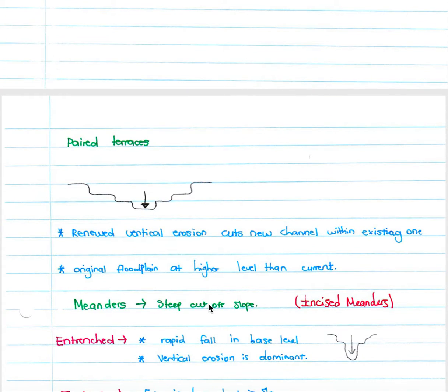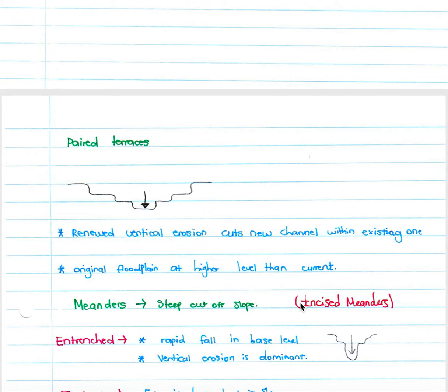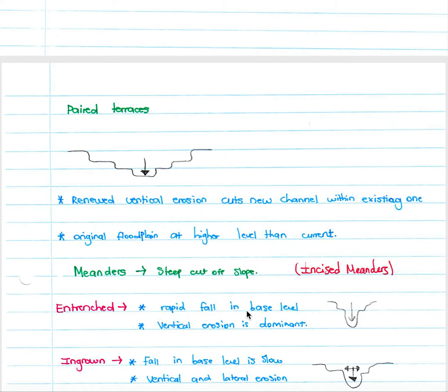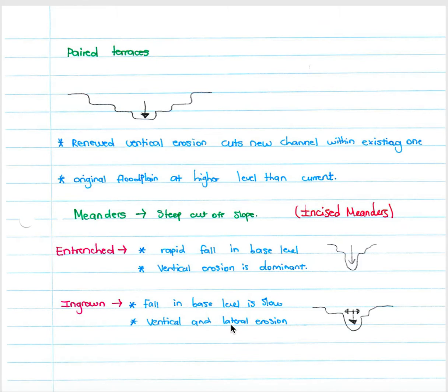Meanders: we can have a steep cutoff slope due to increased vertical erosion, which we will refer to as incised meanders. Entrenched is when we have a rapid fall in base level and vertical erosion is dominant. And ingrown: you have a fall in base level that is slow and vertical and lateral erosion occur.